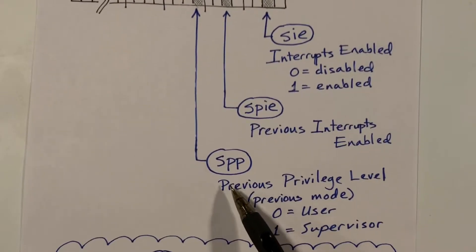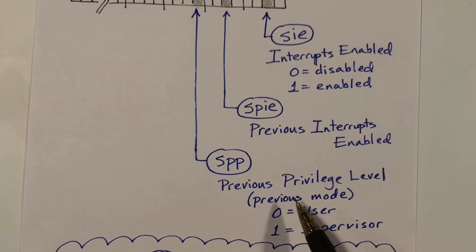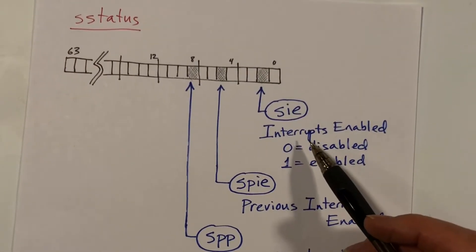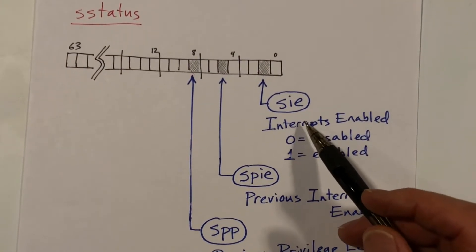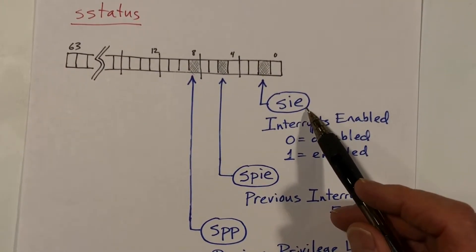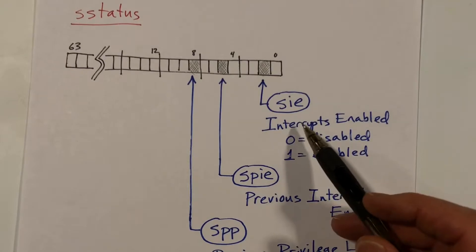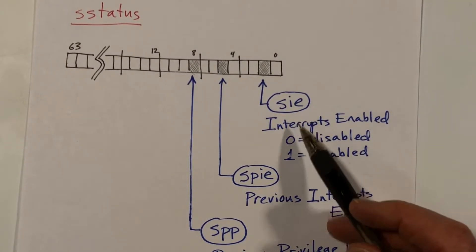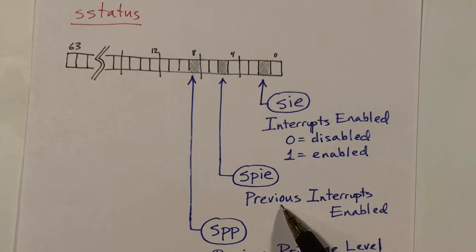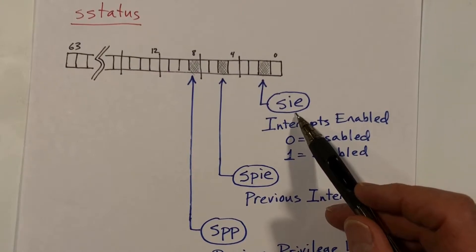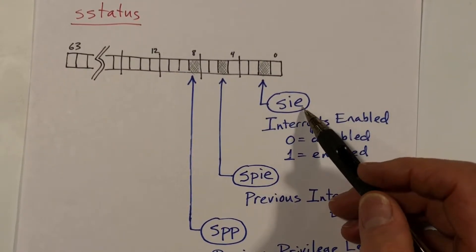We also need to remember what mode we were executing in when the trap occurred — it could be user mode or supervisor mode. The trap can occur as a result of an exception or an interrupt. If it's an interrupt, the previous value was enabled; but we might have an exception occurring while interrupts are disabled. In any case, we need to save the previous value of this bit so that when we return from the interrupted code we can restore it.